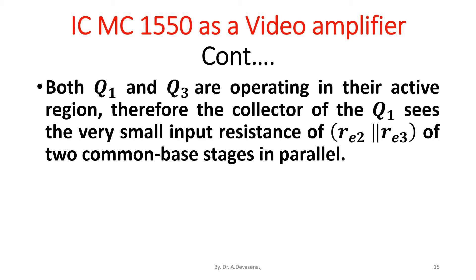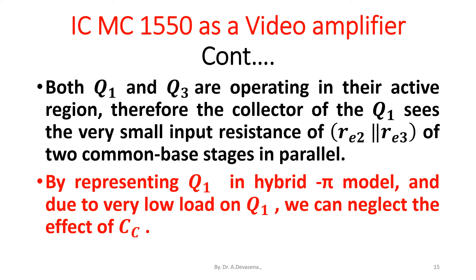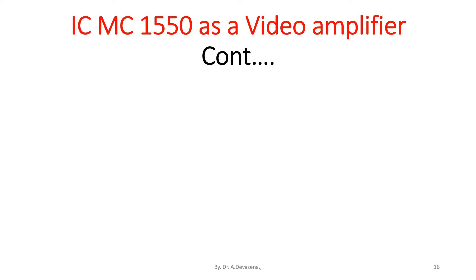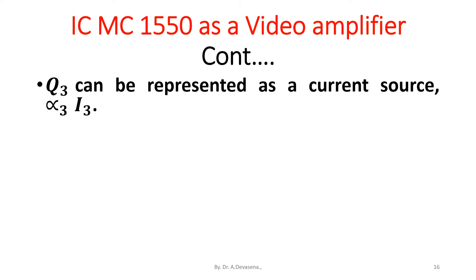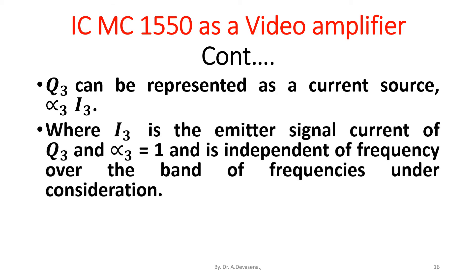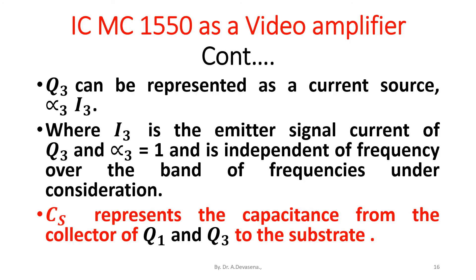The collector of Q1 sees the very small input resistance R_E2 parallel R_E3 of the two common base stages in parallel. By representing Q1 in hybrid-pi model and due to the very low load on Q1, we can neglect the effect of C_μ. Q3 can be represented as a current source α3·I3, where I3 is the emitter signal current of Q3 and α3 is equal to 1 and is independent of frequency over the band of frequencies under consideration. C_S represents the capacitance from the collector of Q1 and Q3 to the substrate.